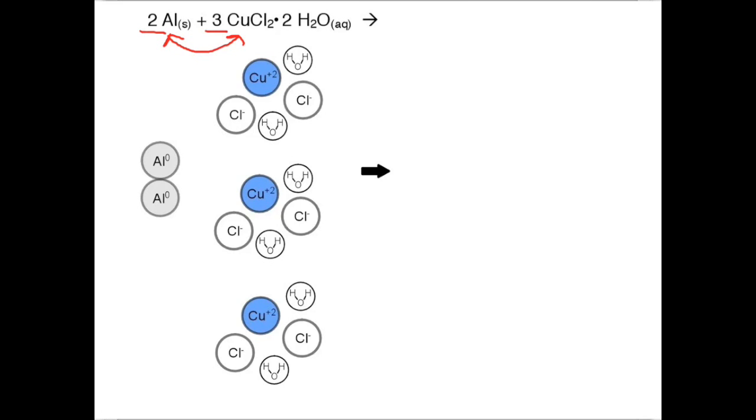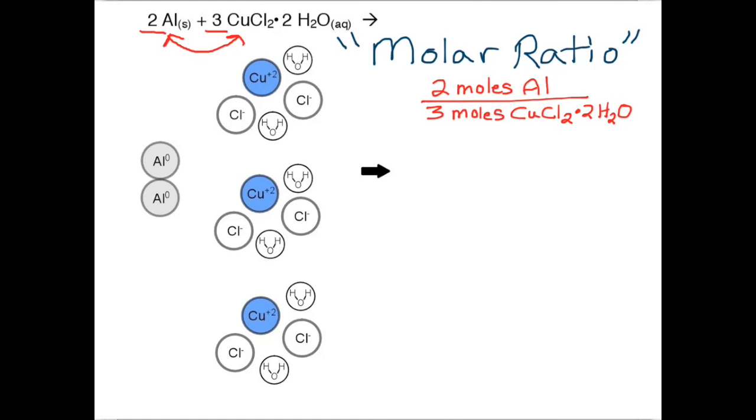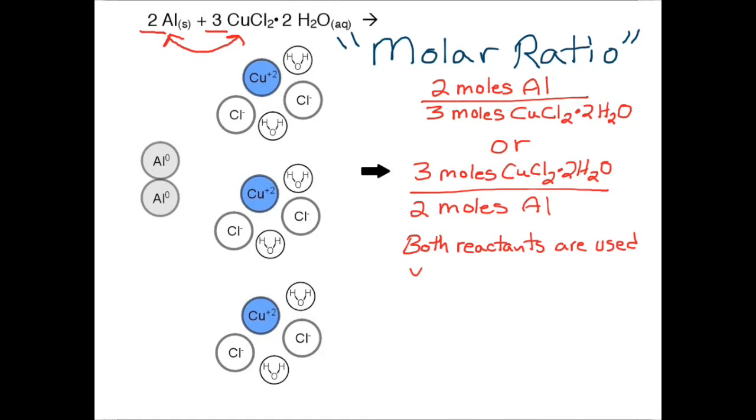This allows us to write what we call the molar ratio, which in this case then would be two moles of aluminum to three moles of copper chloride dihydrate. We could just as well have written that as three moles of copper chloride dihydrate to two moles of aluminum. These two quantities are perfectly matched. So if we used these amounts of the reactants, we would find that they both completely react and get used up at the same time.